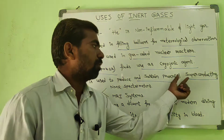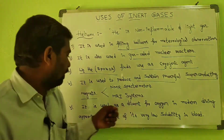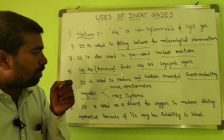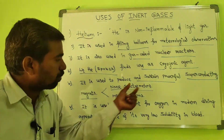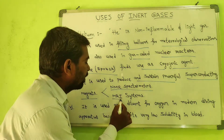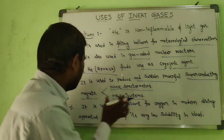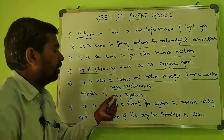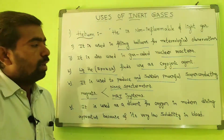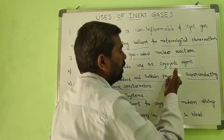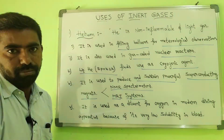Helium is also used to produce and sustain powerful superconducting magnets. These powerful superconducting magnets are important components in NMR spectrometers and magnetic resonance imaging (MRI) systems. Helium is used in the manufacturing of these powerful superconducting magnets.